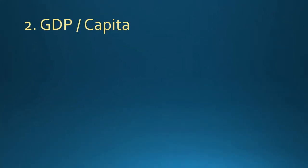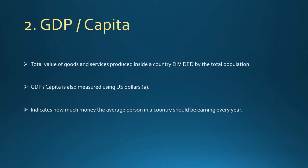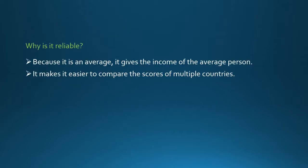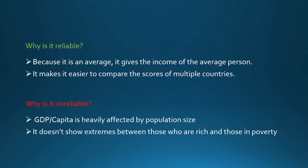GDP per capita is the next economic indicator we are going to examine. It is defined as the total GDP of a country divided by the total population. This value is also calculated using the US dollar, and it indicates how much the average person should earn in a country in one year. It is a reliable indicator of development as it gives an average income and quality of life of the average person, and makes it easier to compare average incomes across countries. The biggest problem, however, is that GDP per capita is highly affected by population size, and it tells us nothing about how much the highest or lowest earners are being paid.